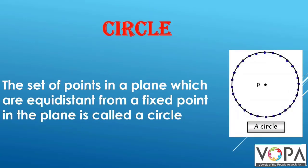What is a circle? The set of points in a plane which are equidistant from a fixed point in the plane is called a circle.